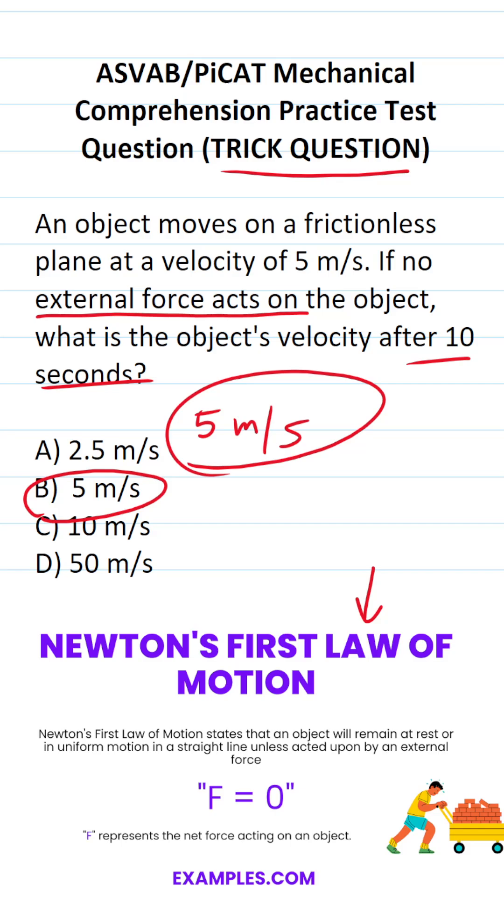Now, if you need help thinking about this one, think about a car driving down the road. What forces do we have at play? We have the engine accelerating the vehicle forward and we have wind resistance in the form of drag slowing the vehicle down.